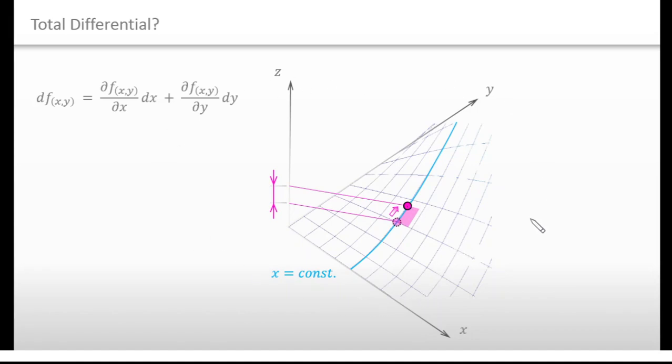In this situation, if your shadow moves by dy, you will go up by this amount. And this is the same as this. Now, we are ready to understand the meaning of this.